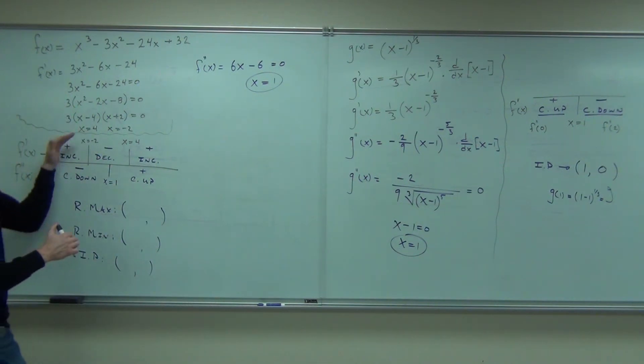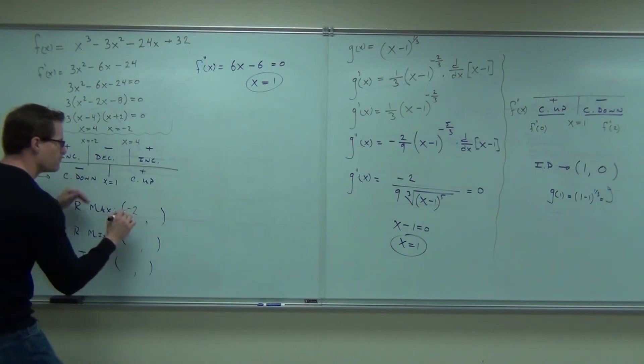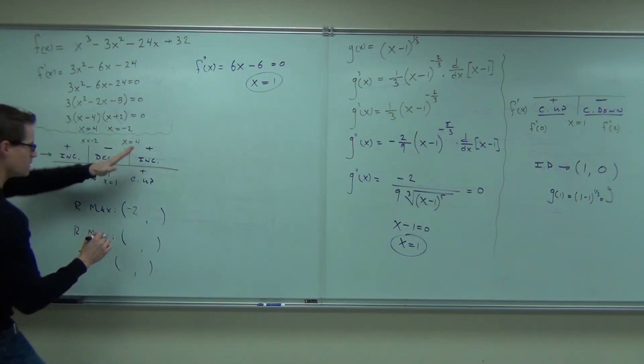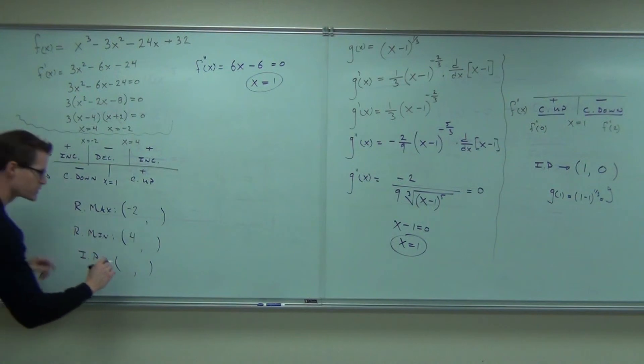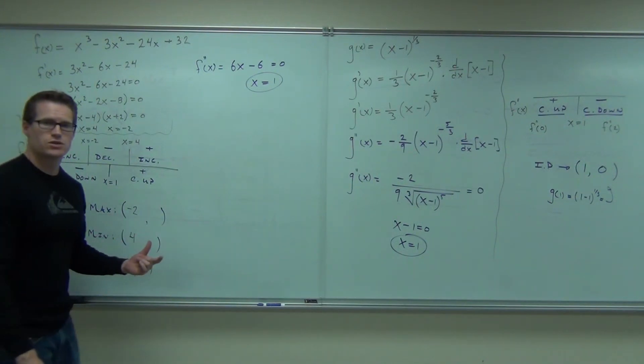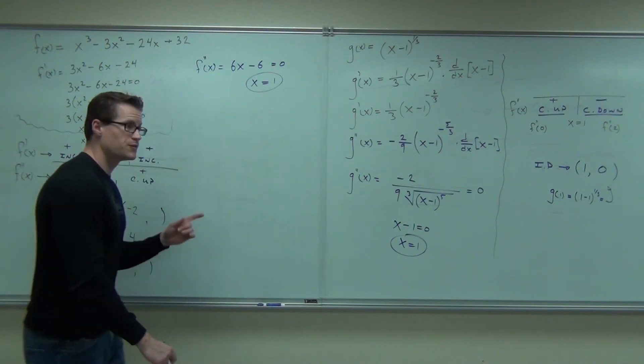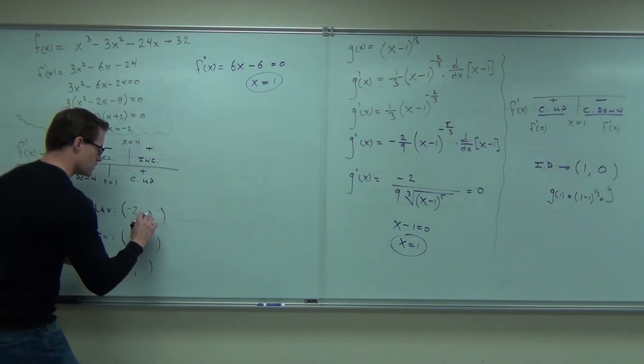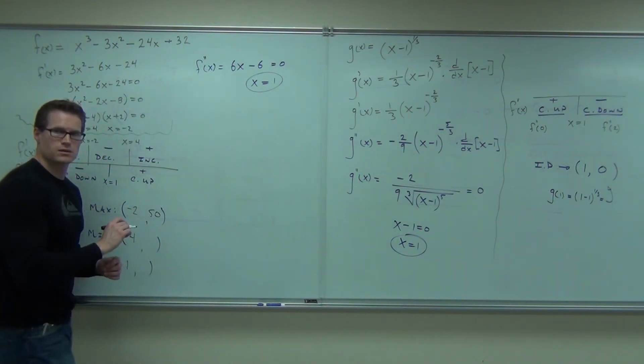Let's see, we said max was at negative 2 something, minimum was at 4 something, inflection point was at 1 something. Does anyone have the negative 2 yet? 50. 50? Double check on that, 50?